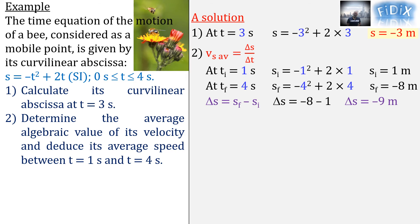Then, we find the change delta s in curvilinear abscissa between these two dates, and we find the corresponding duration. Finally, we replace delta s and delta t by their values in the equation of v_s average, and get the average algebraic value of the velocity v_s average equals minus 3 meters per second.